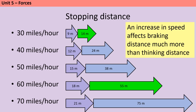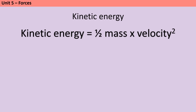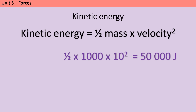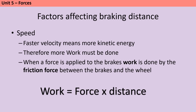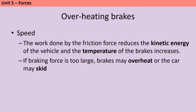One reason braking distance increases more than thinking distance is kinetic energy. A car of 1000 kilograms at 10 metres per second has 50,000 joules of kinetic energy; the same car at 20 metres per second has four times as much energy to get rid of. A car travelling at faster velocity has more kinetic energy, so more work has to be done to stop it. When a force is applied to the brakes, work is done by friction between the brakes and the wheel. Braking at high speeds can be dangerous because it can lead the brakes to overheat and the car may skid.